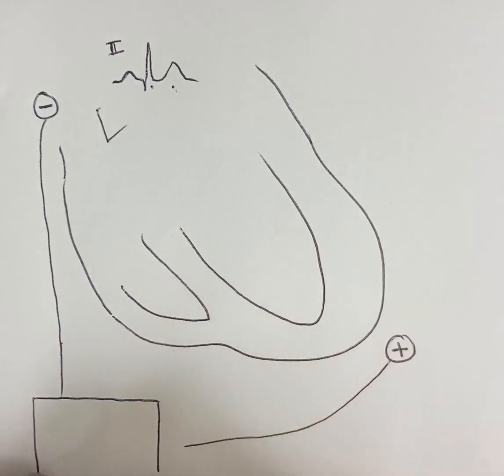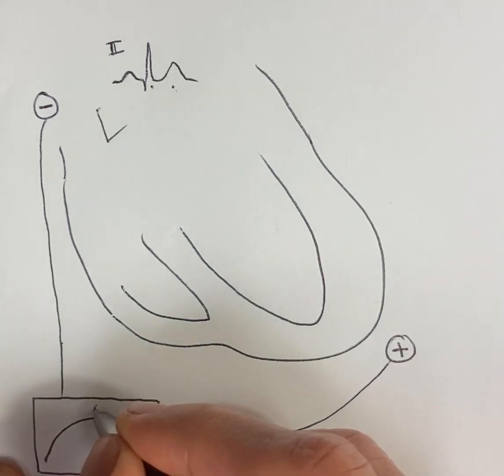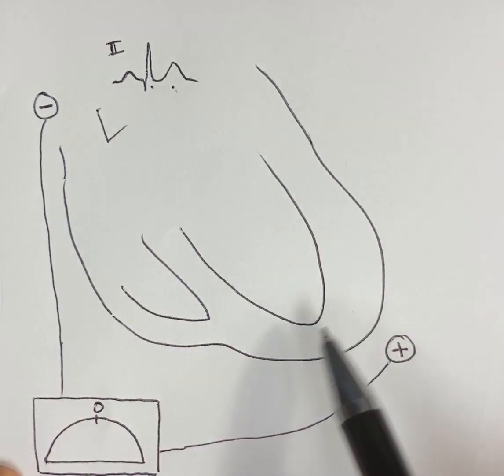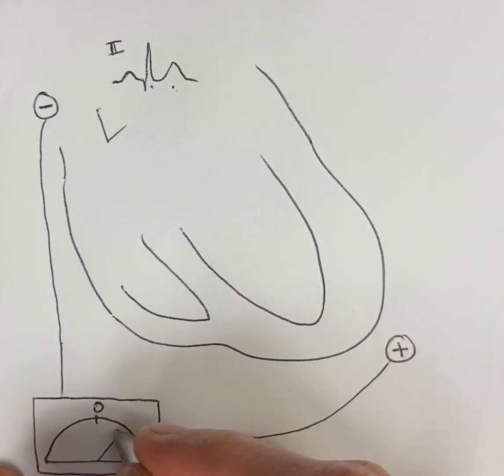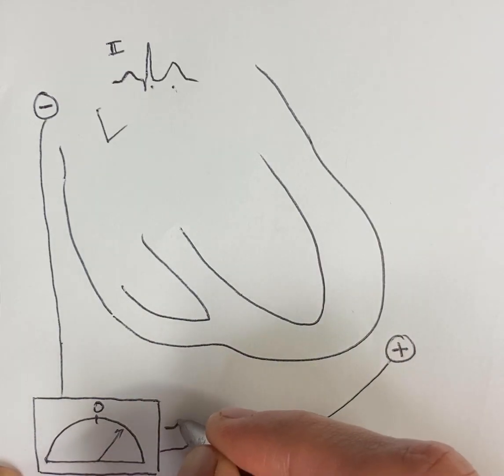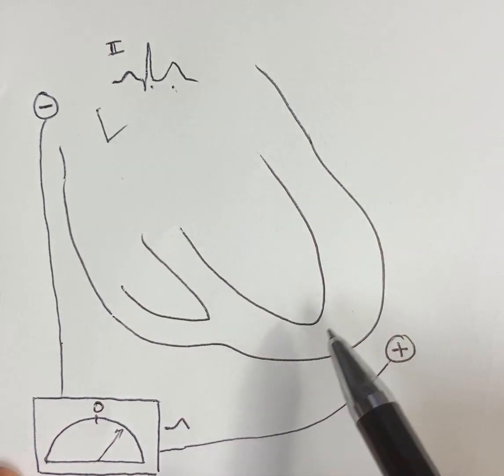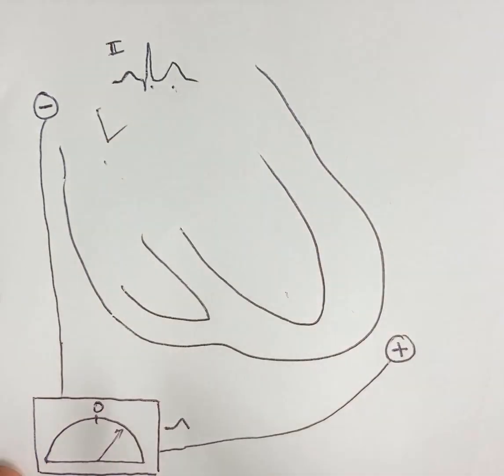Inside the machine, there is essentially a voltmeter which looks for electrical fields that align in this direction of negative to positive, in which case it will read out a positive deflection. If there's an opposite electrical field, it will read out a negative deflection. That's how we get the directions on the EKG.